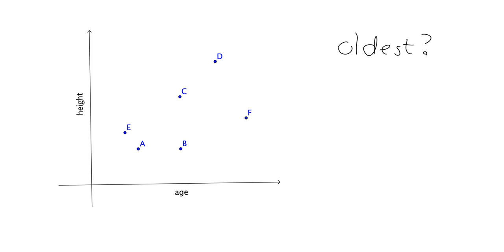when I'm asking about age, I'm really asking how far over to the right are you. Obviously, the person who's furthest over to the right is this person F, and they'll be the oldest.